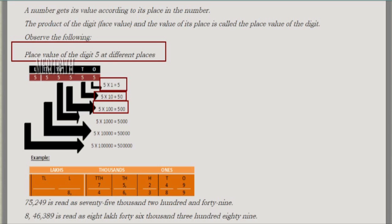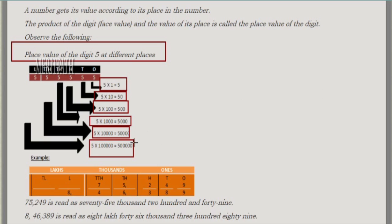For the 5 in thousands place: 5 × 1000 = 5000. For the 5 in ten thousands place: 5 × 10,000 = 50,000. For the 5 in lakhs place: 5 × 1 lakh = 5 lakhs. So in this manner we find the place values: 5, 50, 500, 5000, 50,000, and 5 lakhs.